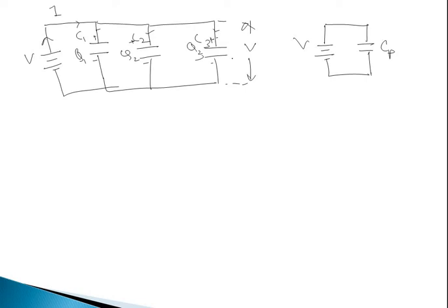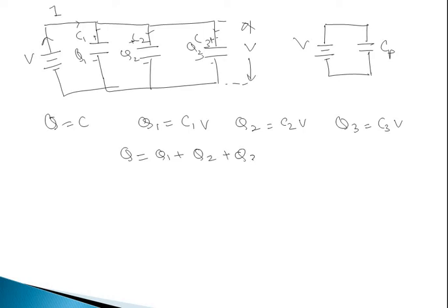We know the basic formula Q = C × V. By observing this figure we can write: Q1 = C1·V, Q2 = C2·V, Q3 = C3·V. Since total Q is the addition of Q1, Q2, Q3, we write Q = Q1 + Q2 + Q3 = C1·V + C2·V + C3·V. Since Q = Cp·V, we get Cp = C1 + C2 + C3. This is the equivalent capacitance of the parallel combination.